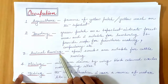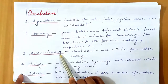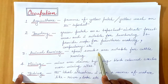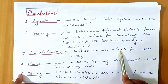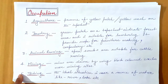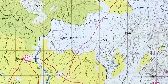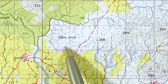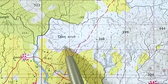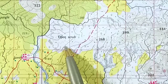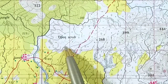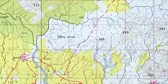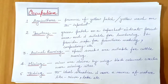Animal rearing is practiced mostly in open scrubs, because these open scrubs have grasses and are suitable for cattle rearing. Here is the open scrub in the topographical map. These areas have grasses but do not have trees because their rainfall is very less, making them very ideal for animal rearing and sheep rearing.